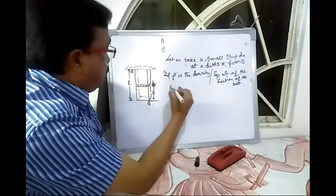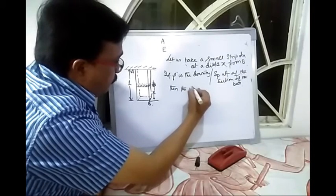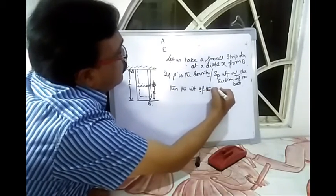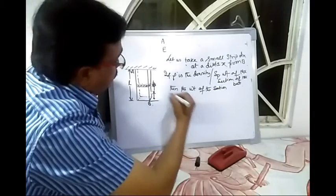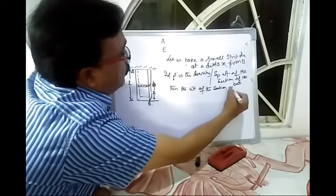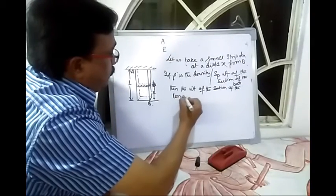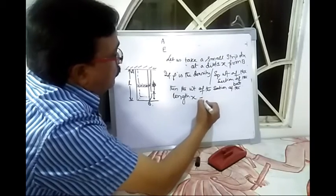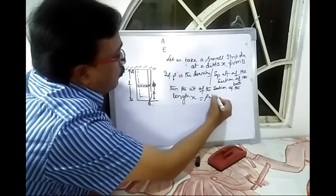then the weight of the section of length x is equal to rho into volume.